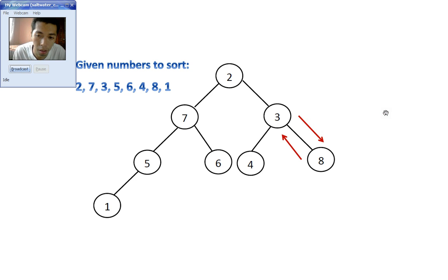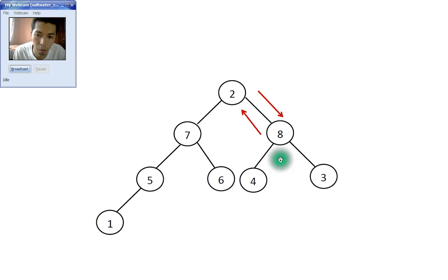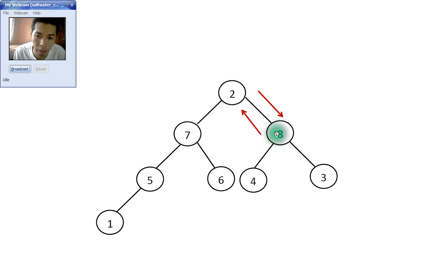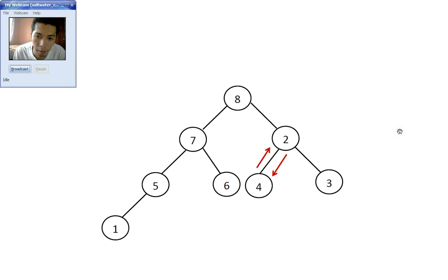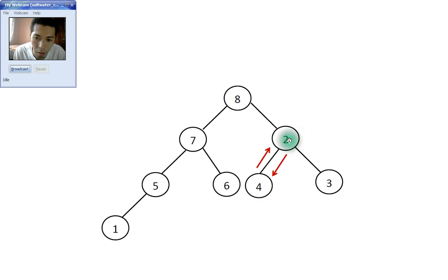Since we shifted 8 and 3, we now evaluate the top. 2 is less than 8, so 8 will be shifted to the top and 2 will be shifted down. Then we evaluate the right side again. 2 is less than 4, so 2 will move to the position of 4 and 4 will move to the position of 2.